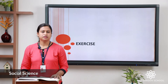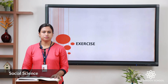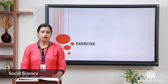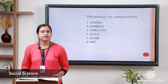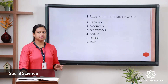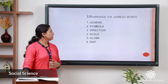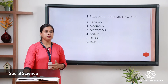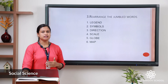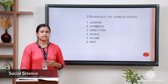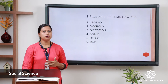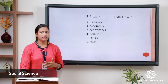Now let us move to the third exercise: rearrange the jumbled words. You can see the words are in jumbled format — you have to arrange them properly. The correct answers are: first, legend — L E G E N D; second, symbols — S Y M B O L S; third, direction — D I R E C T I O N; fourth, scale — S C A L E; fifth, globe — G L O B E; sixth, map — M A P.